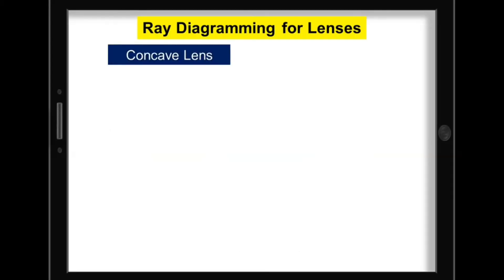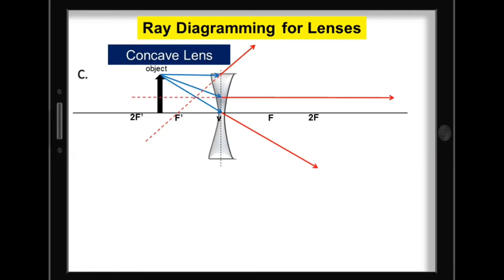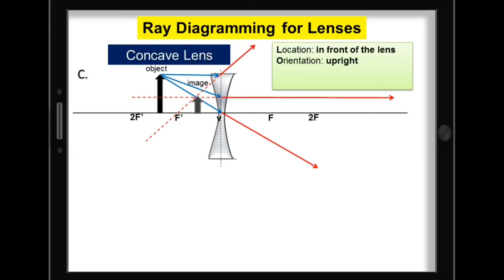For the ray diagramming for concave lens, for C, where the object is located between 2F and F, we can use the PF ray — extending the refracted rays in front of the lens — as well as the V ray and the FP ray. Notice the merging of the virtual refracted rays in front of the lens. To describe the image: for the location, it is in front of the lens; orientation, upright; size, reduced; and the type of image, virtual image.